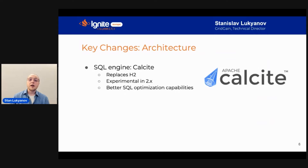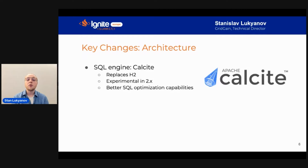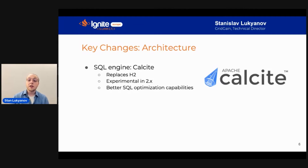On the SQL side, Ignite 3 makes Calcite the default and only SQL engine. Calcite is a more performant engine that allows better optimizations for SQL compared to H2, which is the default in Ignite 2. Ignite 2 already added Calcite as an alternative experimental engine, and in Ignite 3 this will be the default choice.